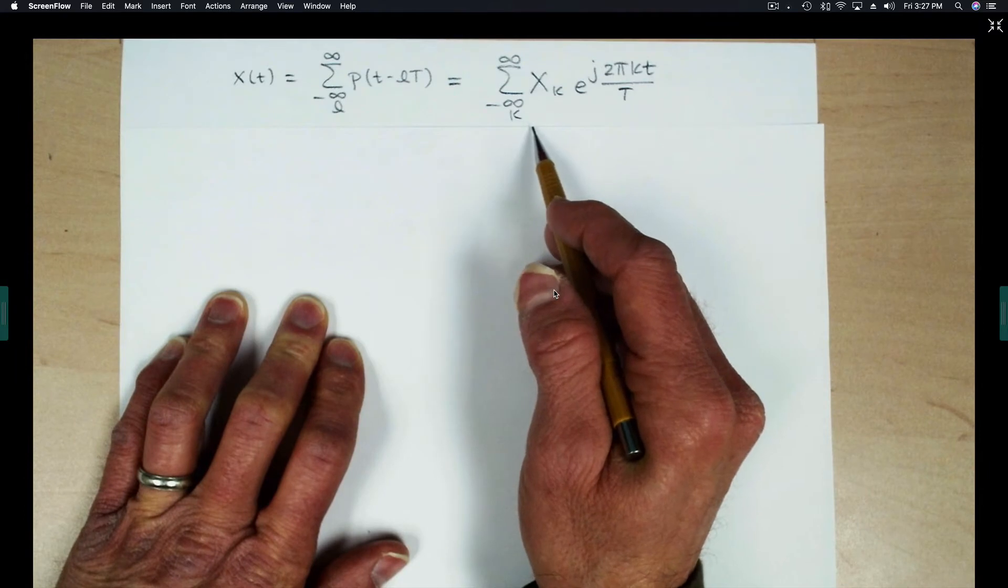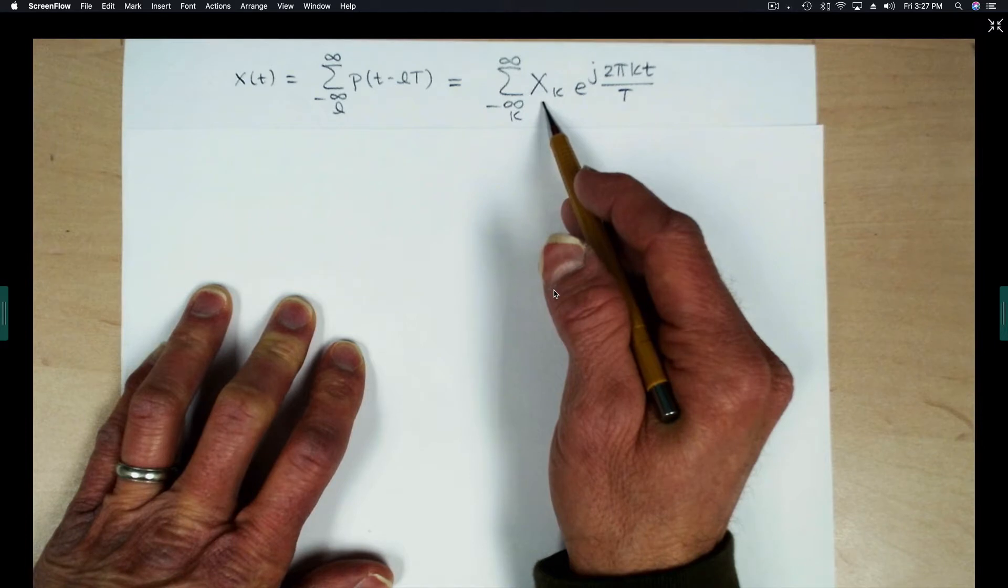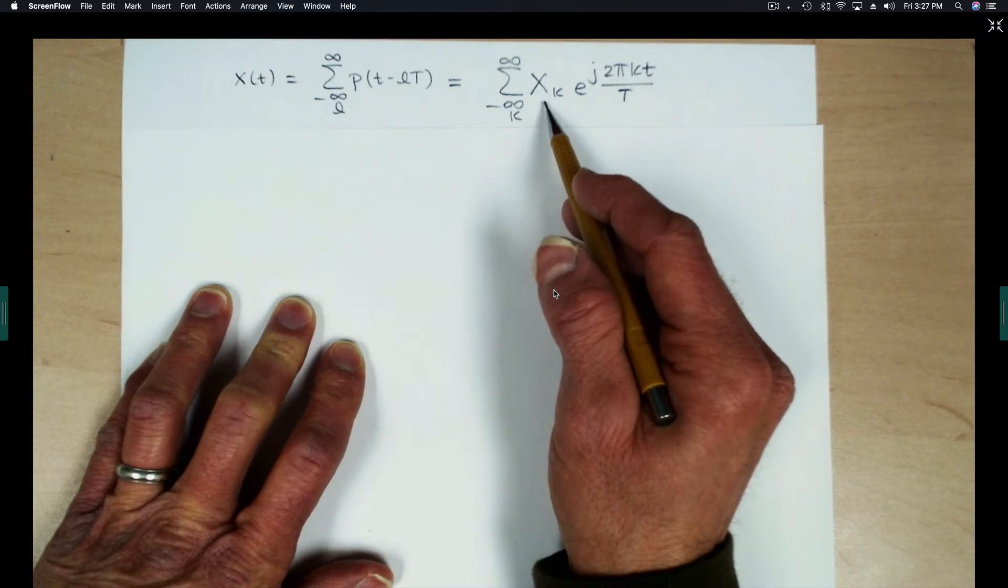I've gone ahead and written down the Fourier series expansion of this periodic signal. The next step in calculating the Fourier transform of this periodic signal is calculating the Fourier series coefficients, x sub k.